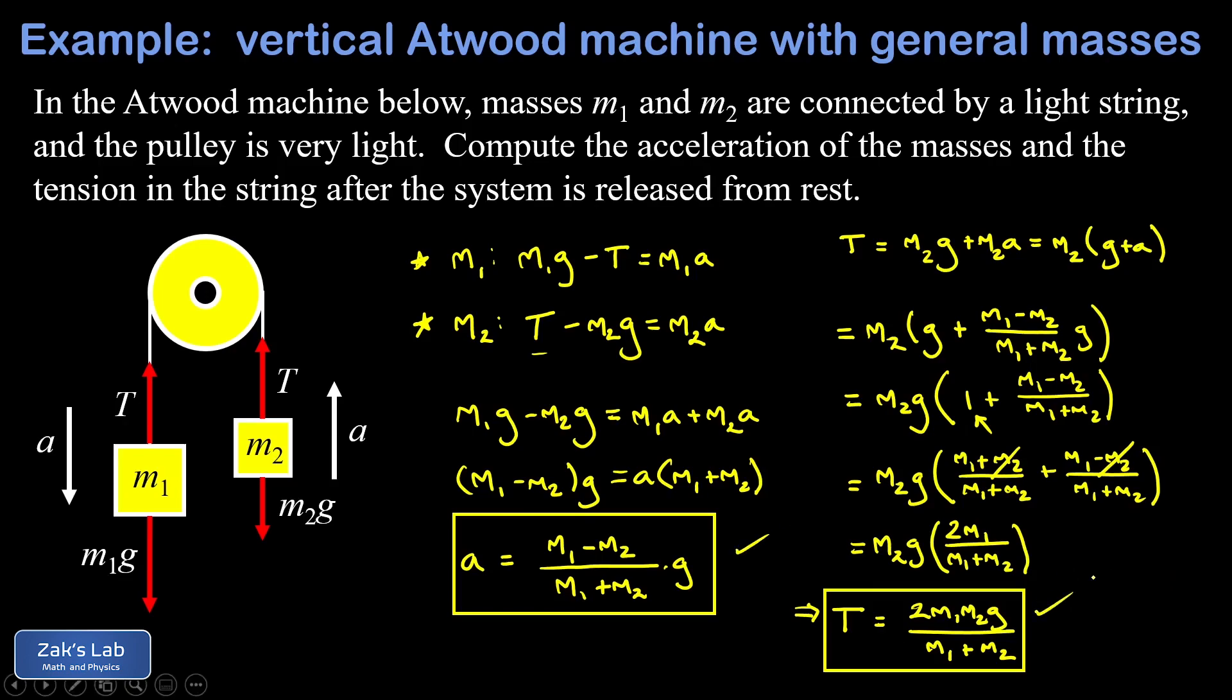The correct acceleration and tension will pop out immediately. Notice again that if we put in an m1 that's smaller than m2, a just comes out negative. If it's more like what it looks in the picture where m1 is bigger than m2, a comes out positive.